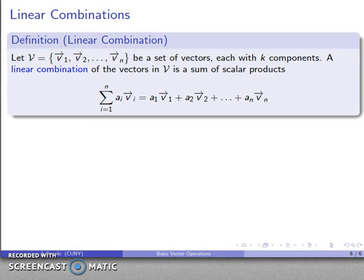Now, anything we do once, we can do any number of times and in various combinations. So an important idea is what's known as a linear combination of vectors. So let's take some set of vectors v1 through vn and assume that each of these vectors is the same size. Each of them has k components.